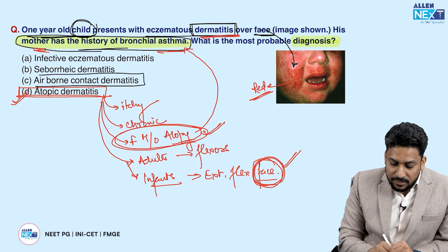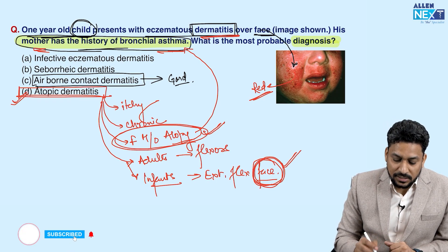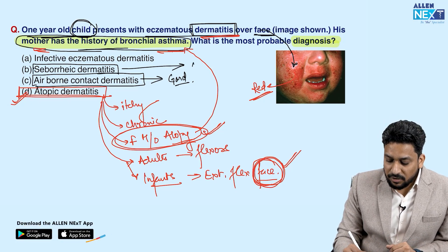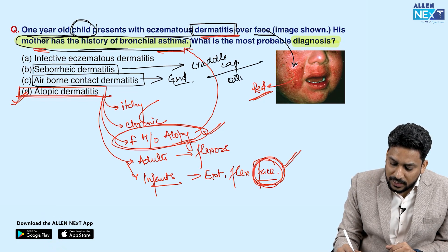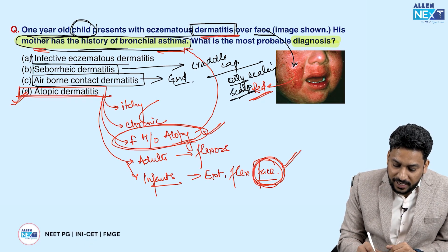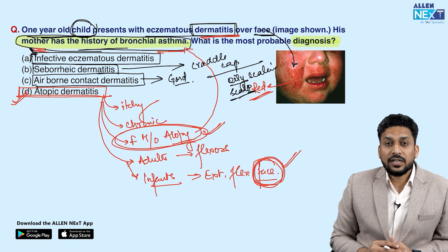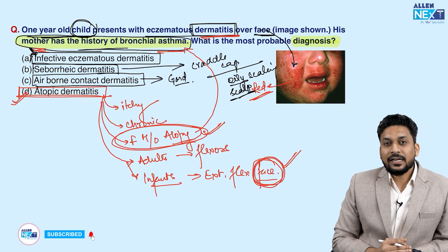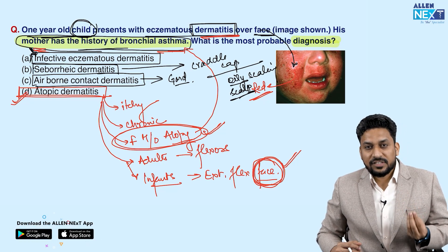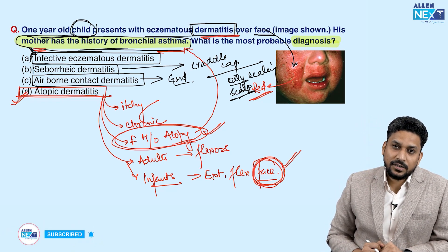In airborne contact dermatitis, it is due to the plant parthenium, commonly seen in gardeners or farmers, and it occurs over exposed areas. Seborrheic dermatitis occurs over seborrheic areas, and in infants the common presentation is cradle cap — oily or greasy scaling over the scalp. In infective eczematous dermatitis, there is always infection, so you will find pustules or pus present, and there may be other symptoms like fever or increased leukocyte count. So the answer here is atopic dermatitis.